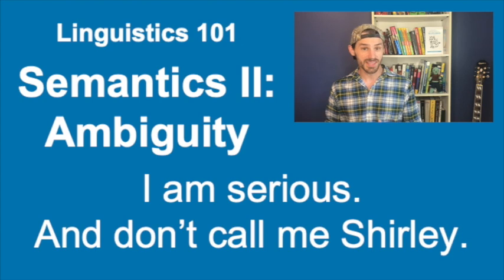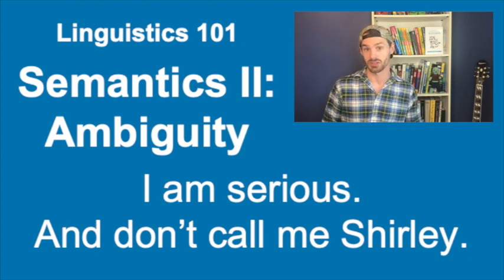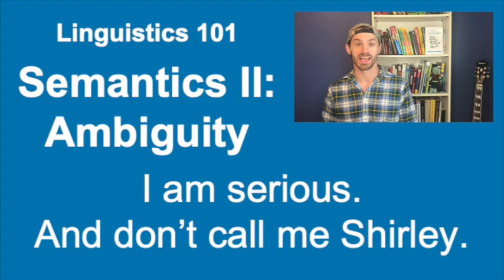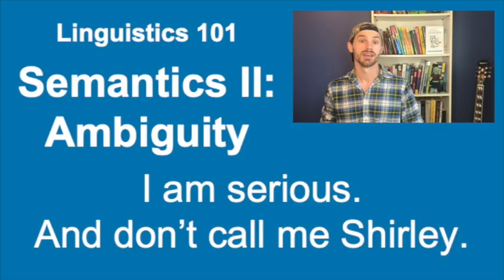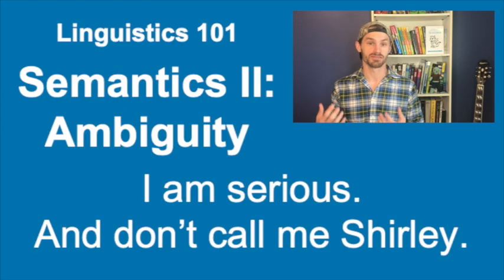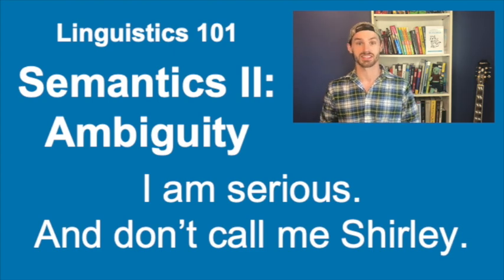When something is ambiguous, it's open to more than one interpretation, or it can have a double meaning, as in this sentence: "Surely you can't be serious." "I am serious, and don't call me Shirley." So ambiguity causes confusion, and there are a lot of different types of ambiguity in linguistics.